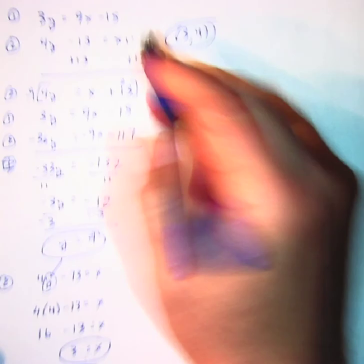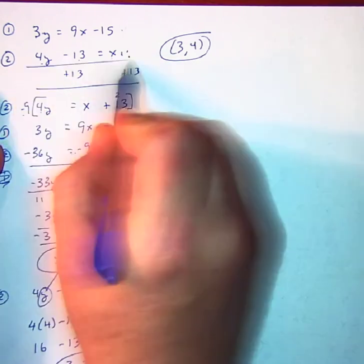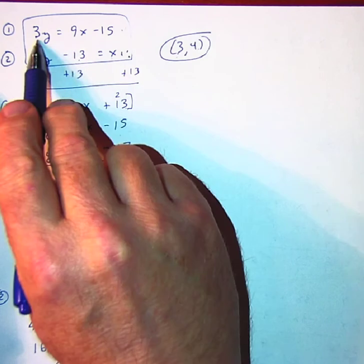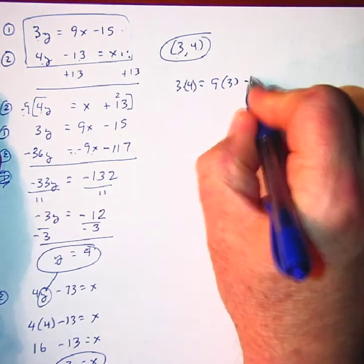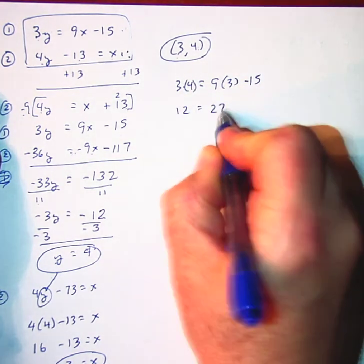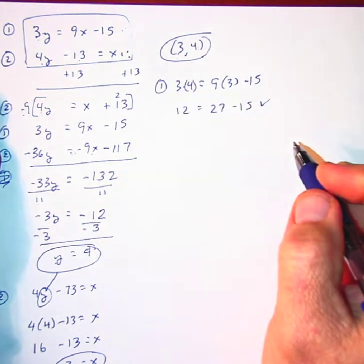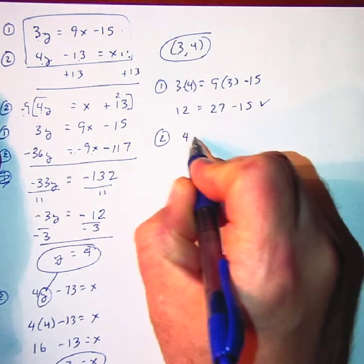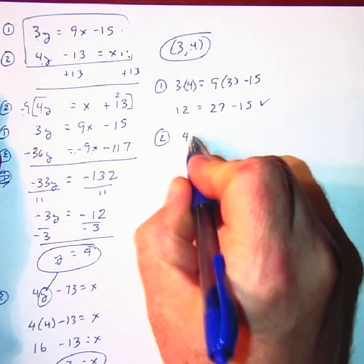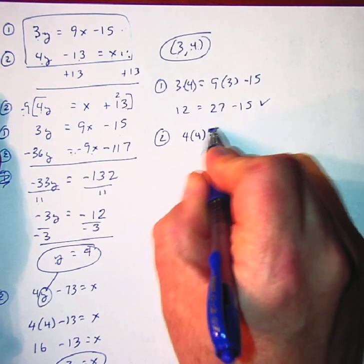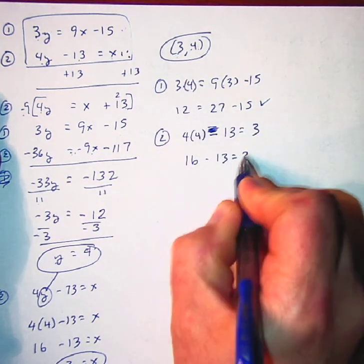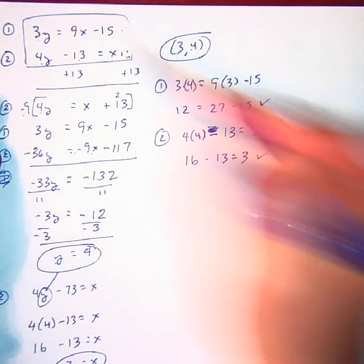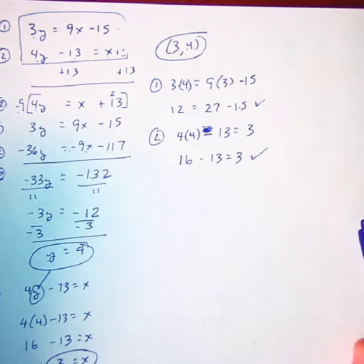Finally, we'll substitute into our original two equations to verify. Substituting 4 for y and 3 for x in equation 1: 3 times 4 is equal to 9 times 3 minus 15, or 12 equals 27 minus 15. That checks. In the second equation: 4 times 4 minus 13 is equal to 3, or 16 minus 13 equals 3. That also checks. The point is on both lines. Good luck and success.